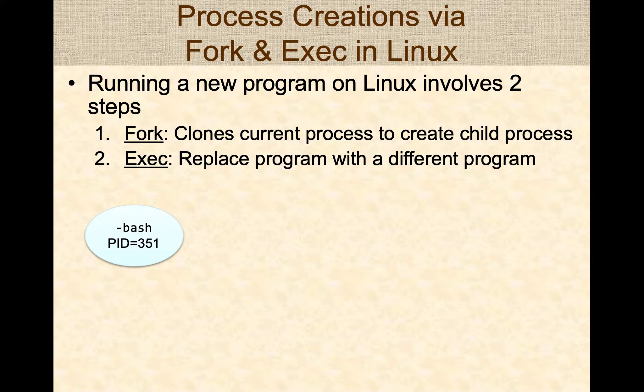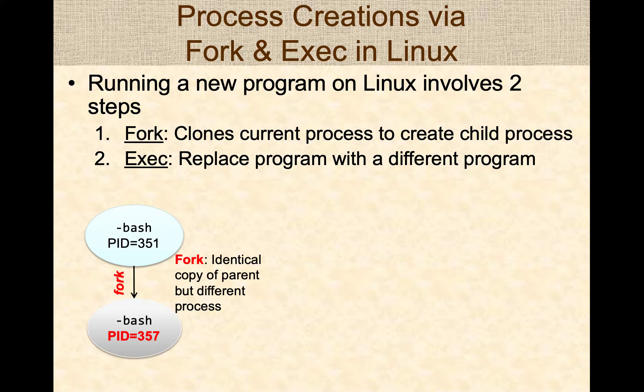In this case, bash will first fork itself, creating an identical copy of itself, but it's a completely different process. So you have a new process ID, new virtual memory settings, even though the memory layout is the same — but it's an identical clone. That's what fork does: creates an identical clone.